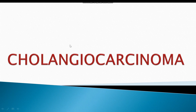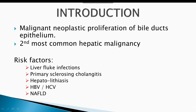The next topic of our discussion is cholangiocarcinoma. Cholangiocarcinoma is malignant neoplastic proliferation of bile duct epithelial cells. The epithelium lining the bile duct becomes neoplastic and forms a carcinoma, which is known as cholangiocarcinoma.